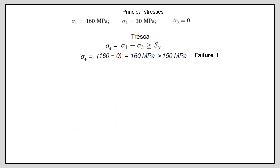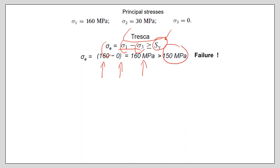Tresca says the equivalent stress is sigma 1 minus sigma 3. If this difference exceeds the yield strength of the material, we may have failure. Here, 160 minus zero gives 160 MPa, and the yield strength is 150 MPa, so Tresca predicts failure.